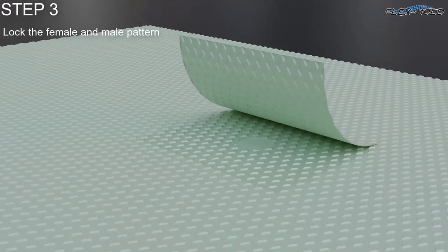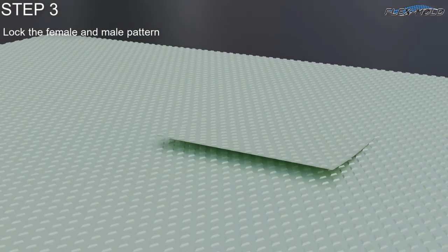Lock the female and male pattern together, then hinge the female pattern to the deck by using tape.